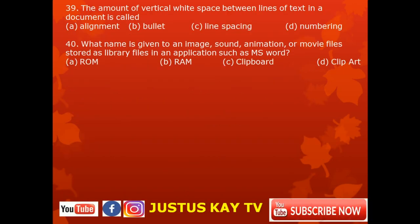Question 39. The amount of vertical white space between lines of text in a document is called: A. alignment, B. bullet, C. line spacing, D. numbering.